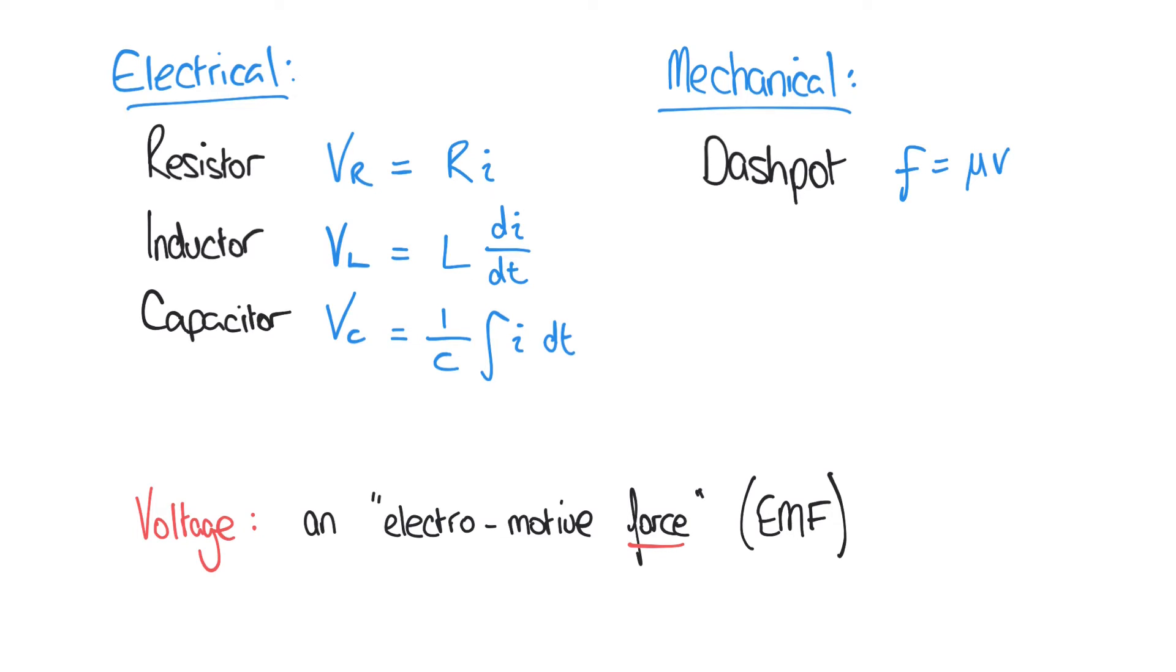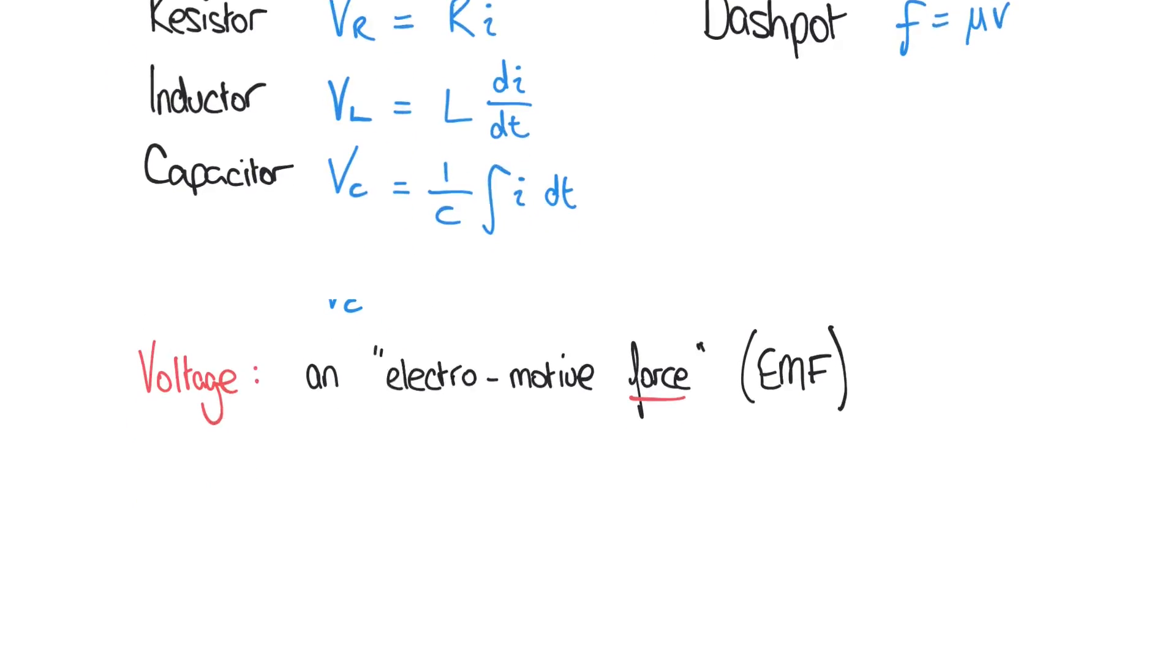So we've already seen here that there's some analogies between voltage and force, as well as between current and velocity. These analogies exist through many different electrical and mechanical parameters as well. Let's see a few more.